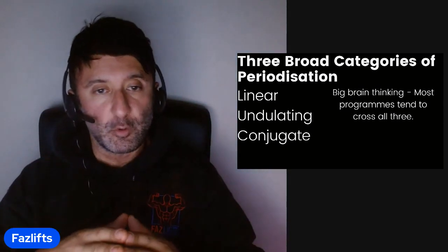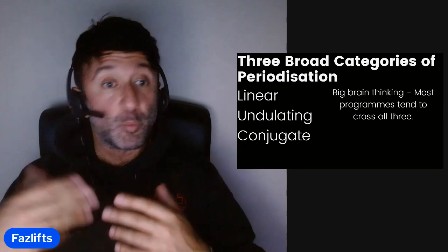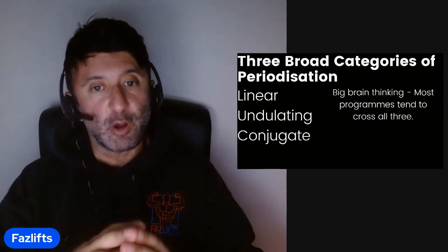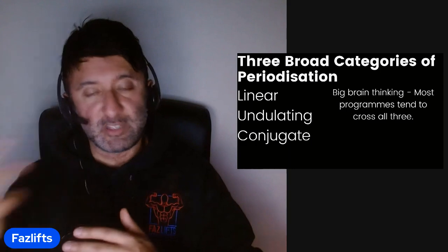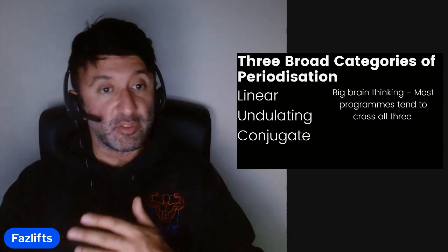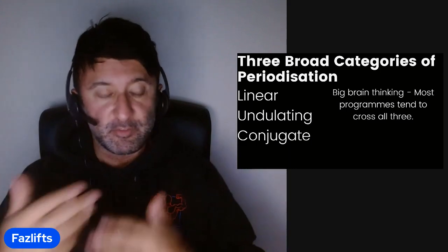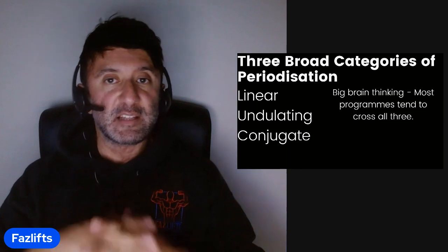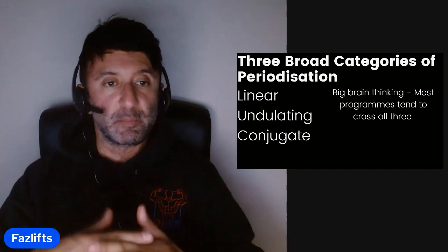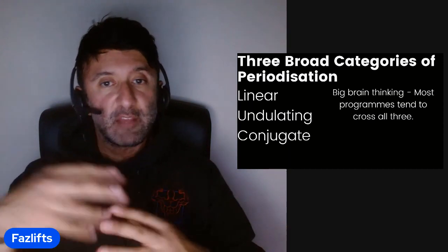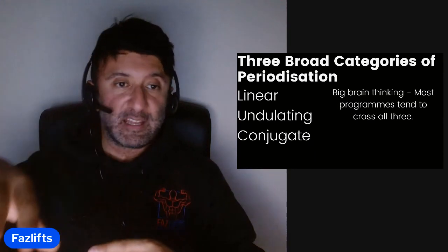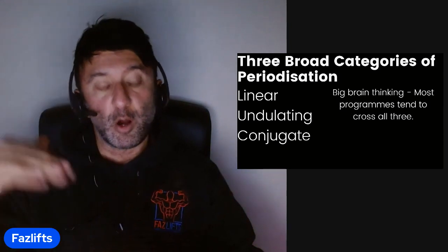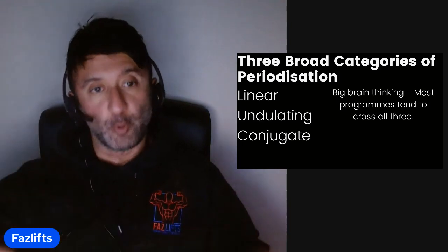We typically refer to Westside as a conjugate program, but there are elements of everything within that. We typically refer to other things as linear, but there are generally elements of undulation within those programs. So it's important to be precise about definitions before moving on with this four-part series.